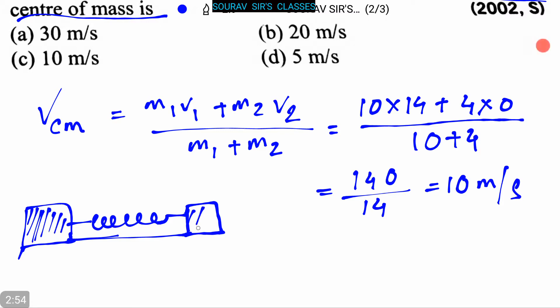From this question, velocity v1 equals 14 meter per second and v2 equals zero. This is m1 where the mass is 10 kg, and this is m2 where the mass is 4 kg on the frictionless plane.